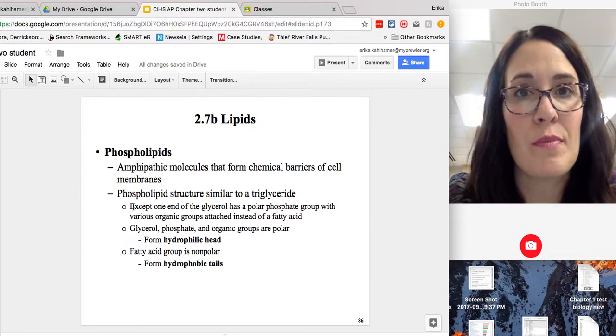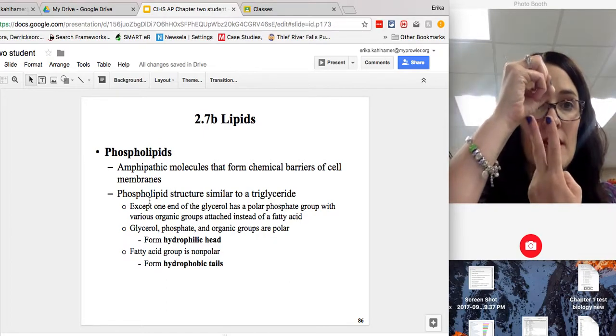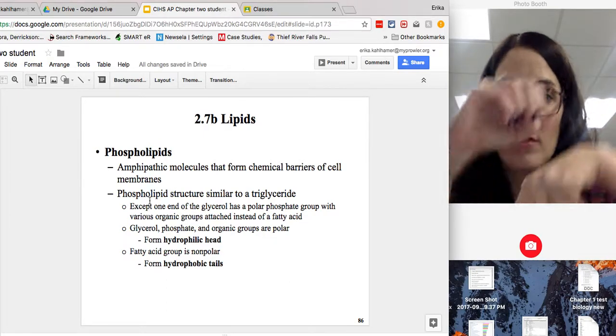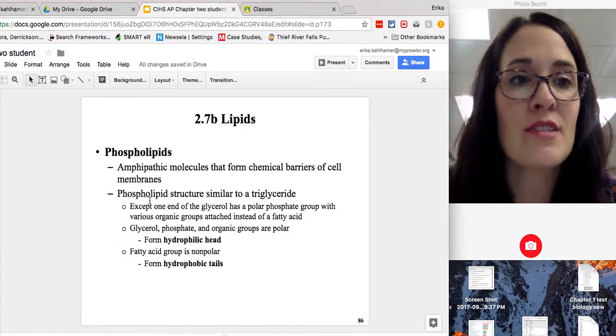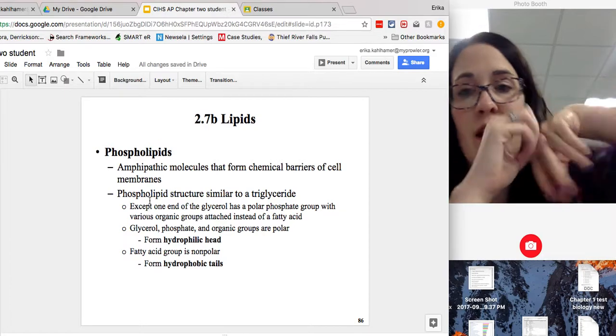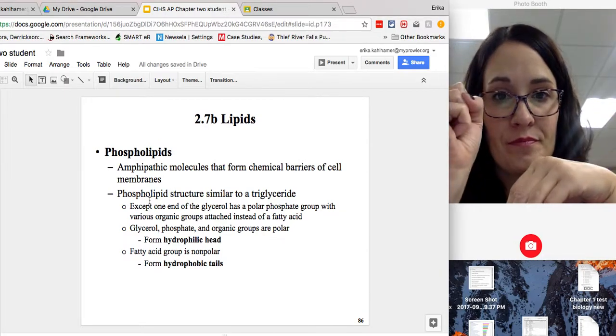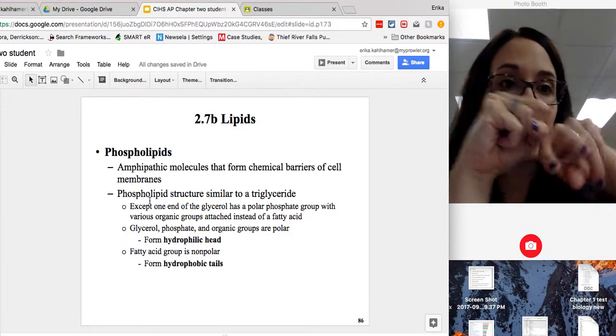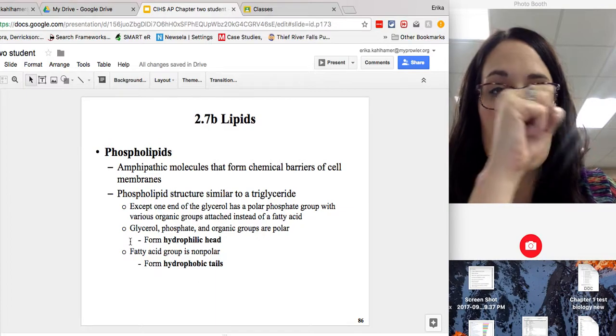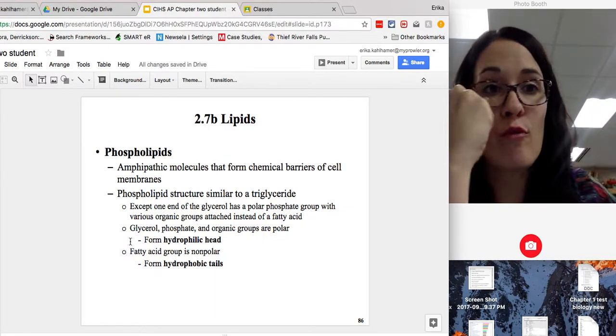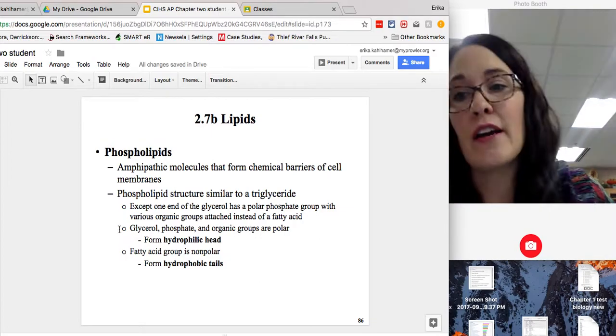Another type of lipid is a phospholipid. It's amphipathic. If you remember, it has a polar region and two nonpolar tails. It's similar to a triglyceride, except it has only two fatty acid tails. And there's a polar head, a polar phosphate. The phosphate head is hydrophilic, it likes water. And the tails are hydrophobic.